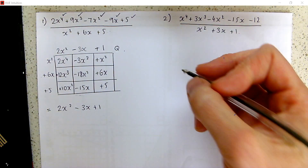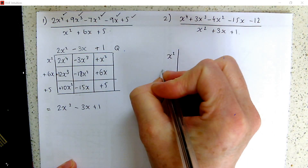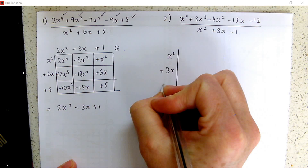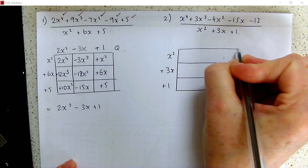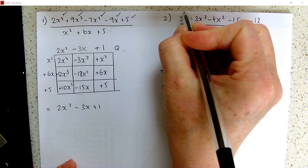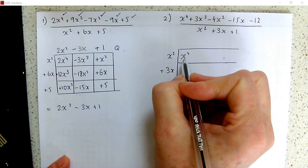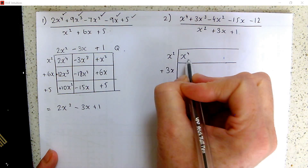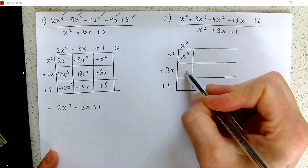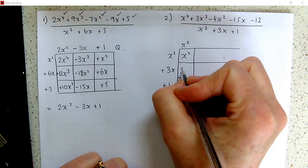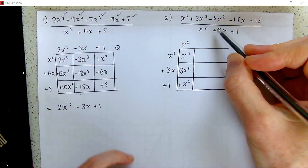Let's have a look at another example. We start the same — we put the divisor down the side, split into its terms, and start drawing the grid. We start with the first highest-powered term on the numerator, so we've got x to the power of 4. We think: what do we multiply x squared by to make x to the 4? We need another x squared. We fill in the boxes beneath by multiplying, so we get 3x cubed and x squared.